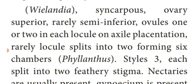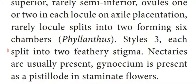Tetra (4) or penta (5) carpels in some species. Gynoecium is syncarpous — carpels are fused together. Ovary is at the top, superior. Rarely they show semi-inferior ovary. Ovules are one or two in each locule with axial placentation. Rarely the locules split into two forming six chambers in Phyllanthus. Styles are three, each split into feathery stigma.